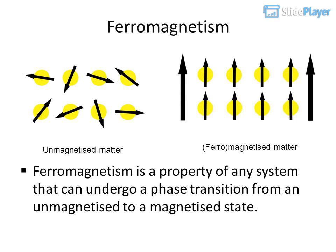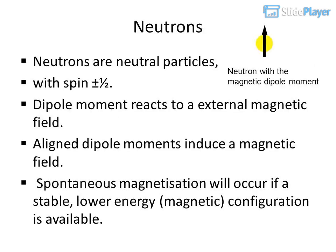Ferromagnetism is a property of any system that can undergo a phase transition from an unmagnetized to a magnetized state. Neutrons are neutral particles with spin plus or minus one-half. Their dipole moment reacts to an external magnetic field, and aligned dipole moments induce a magnetic field.